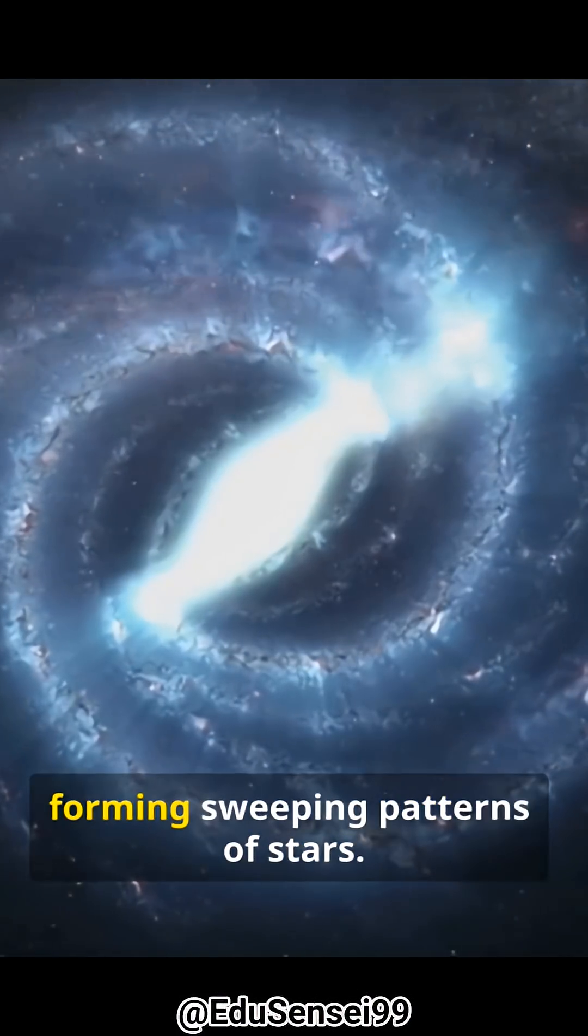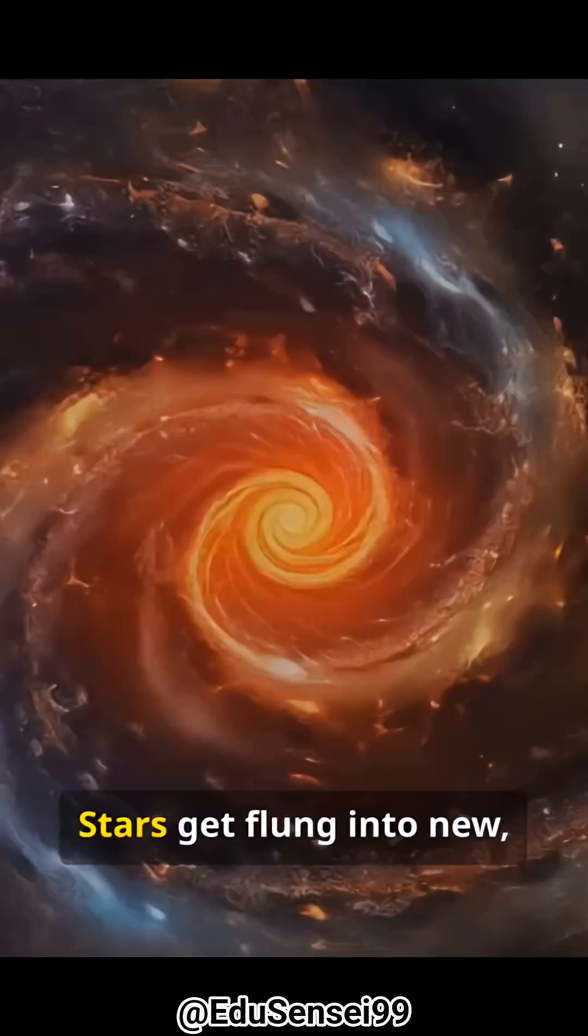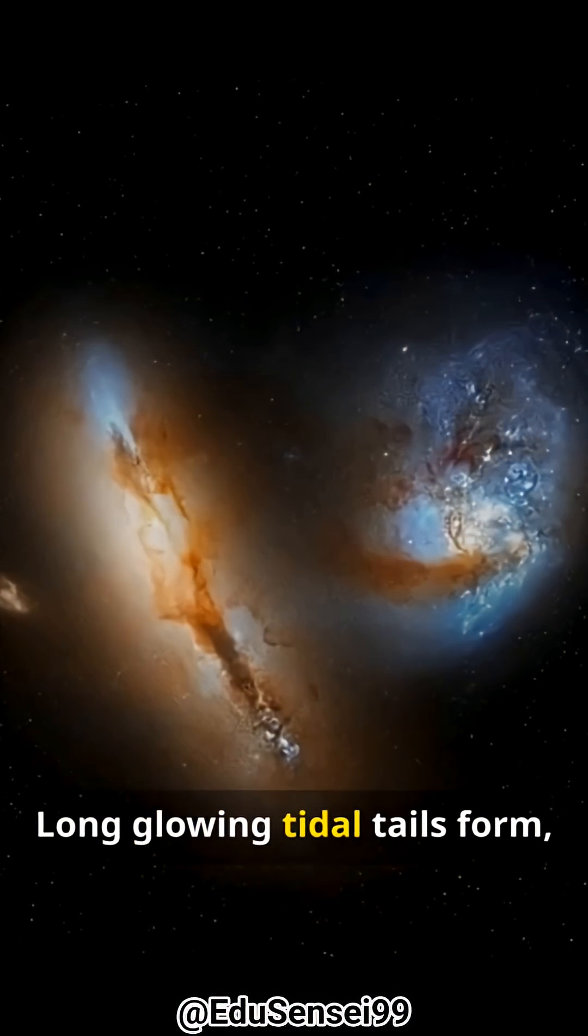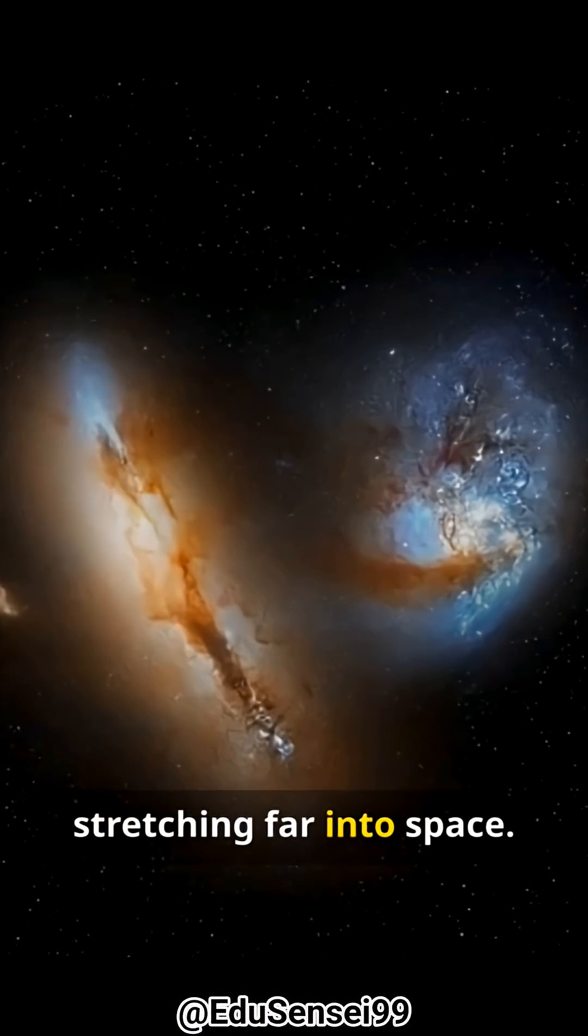Spiral arms twist dramatically forming sweeping patterns of stars. Stars get flung into new elongated orbits across the galaxy. Long, glowing tidal tails form, stretching far into space.